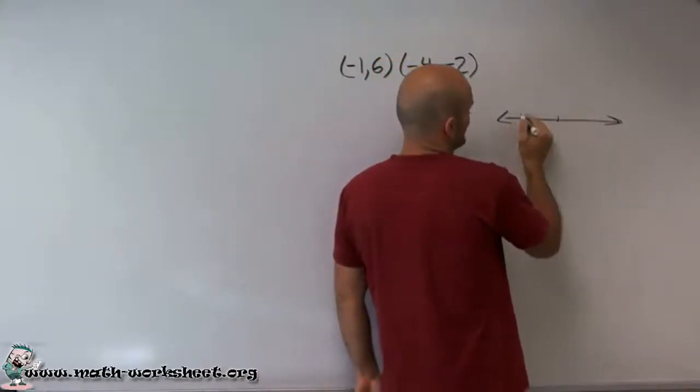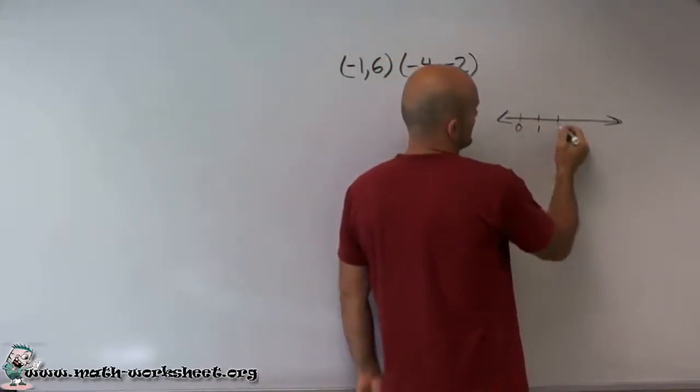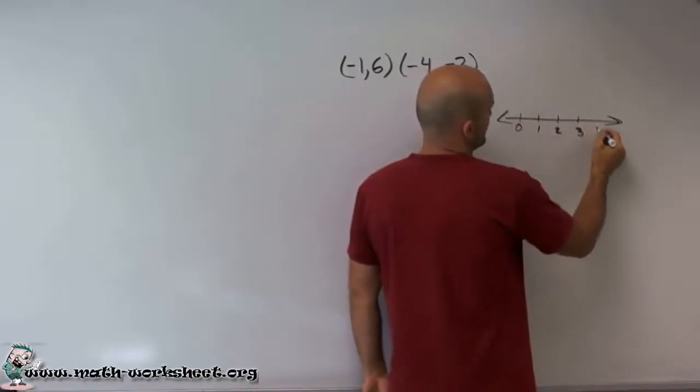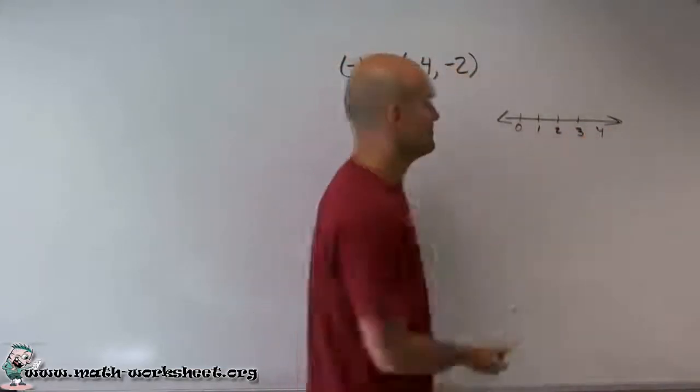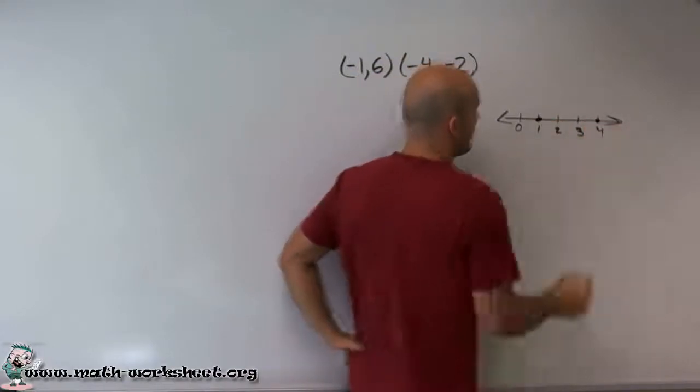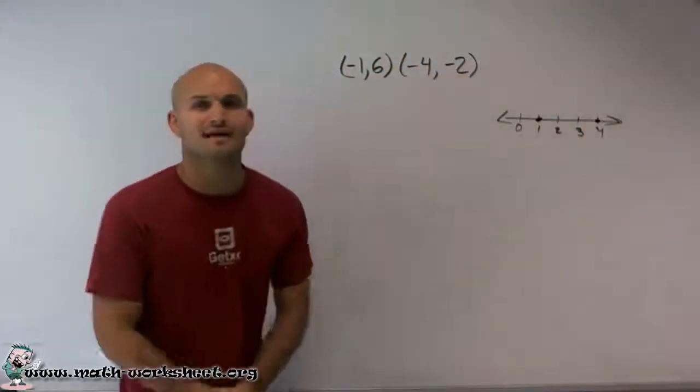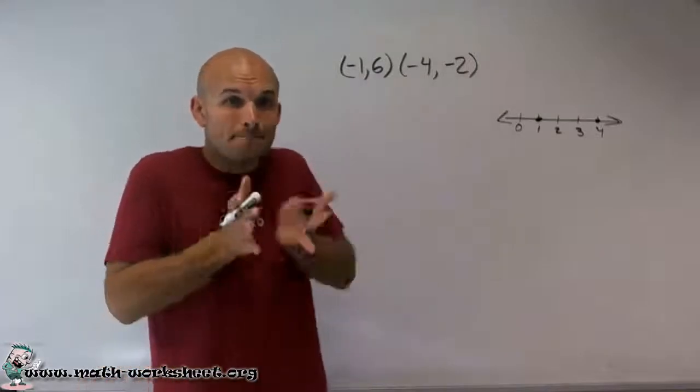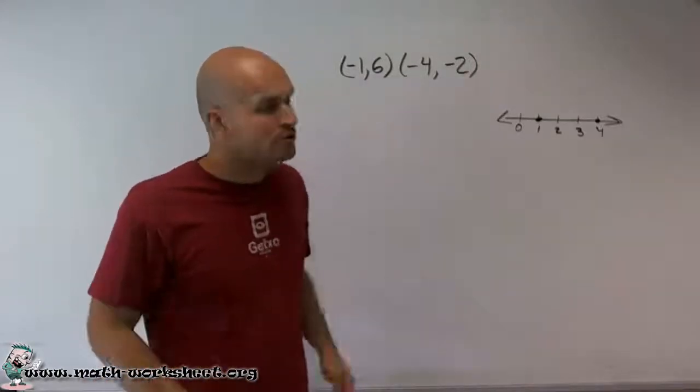And let's just have this be 0, let's do 1, 2, 3, 4. Now, let's say I have a point at 1 and I have a point at 4. And let's say I wanted to find what is the midpoint? What is the middle between those two points?